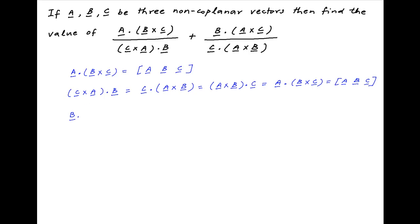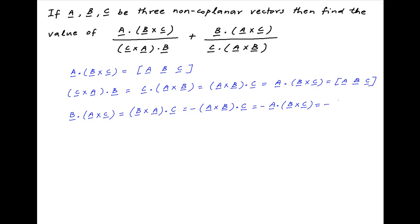Similarly, evaluating B·A×C — this can be written as B×A·C. Now B×A is equal to minus A×B, therefore this becomes equal to minus A×B·C, which can be written as minus A·B×C, which is equal to minus of the scalar triple product [ABC].